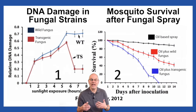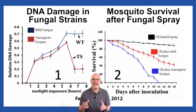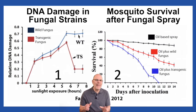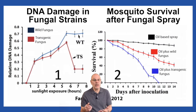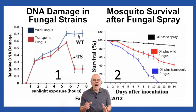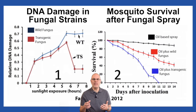In Graph 2, the top line is the control — an oil-based spray without any fungus. It's a fungus-free standard for comparison that lacks the independent variable. The mosquitoes in this treatment are doing just fine, which is actually a bad thing, because the goal is to control the spread of malaria by killing the mosquitoes or interfering with their life cycle. In the treatment represented by the red line, some mosquitoes are dying because they've been infected with the wild-type fungus. But the bottom blue line, which has the transgenic fungi, shows much lower survival rates in the mosquitoes.